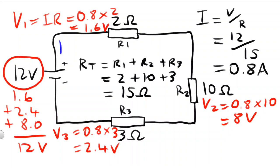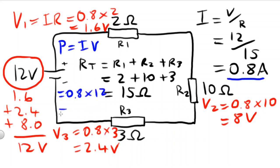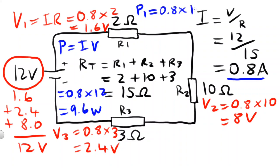To calculate the total power for the circuit, we use the formula P equals I times V, which will equal 0.8 — that was our current — multiplied by 12 volts, which will equal 9.6 watts. Each resistor will also have a power dissipation. So for the first resistor, P1 will equal I times V, so that'll be 0.8 times the voltage drop of 1.6, which equals 1.28 watts.